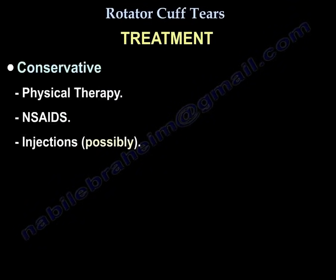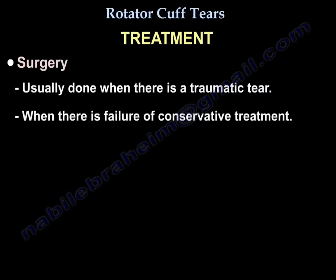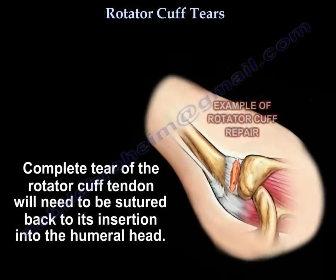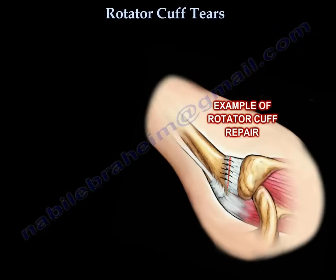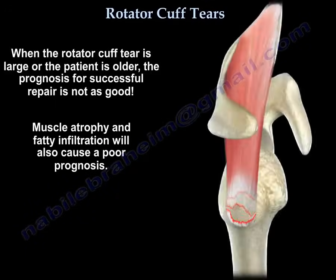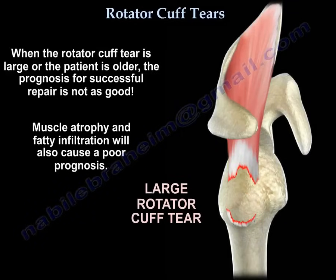Treatment usually starts with physiotherapy, NSAIDs, and possibly some injections. Surgery is typically indicated when you have a traumatic tear or when conservative treatment has failed. A complete tear will not heal by itself — you need to suture the tendon back to its insertion on the humerus. When the tear is large or the patient is older, the prognosis for successful repair is not as good. Muscle atrophy and fatty infiltration also indicate poor prognosis.